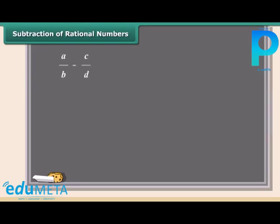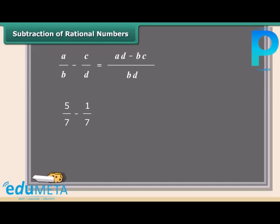Subtraction of rational numbers is the same as the addition. Before subtracting the rational numbers, always look for the common denominator. If it's not common, multiply both parts of each number by the bottom part of the other. Here is an example of subtraction. We will subtract 1 by 7 from 5 by 7. We know denominators are already the same, so subtract the numerators and put the answer over the same denominator.